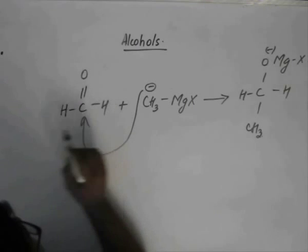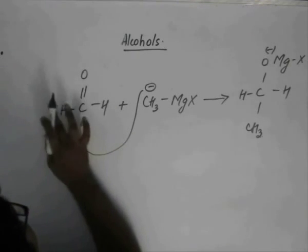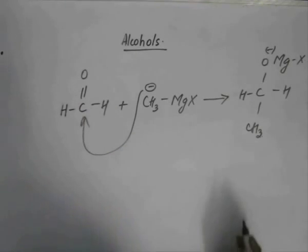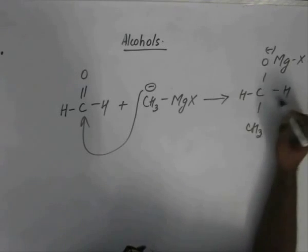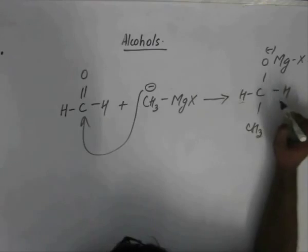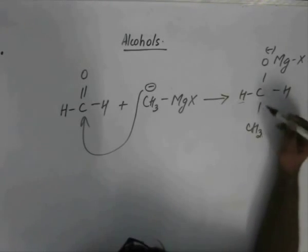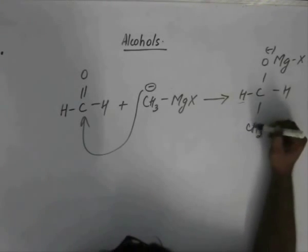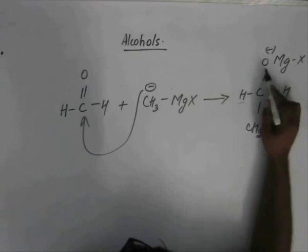If we hydrolyze this compound, we are left with a primary alcohol — that alcohol will be ethanol, CH3CH2OH.